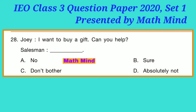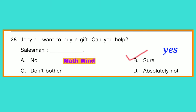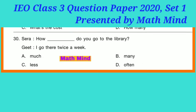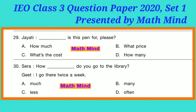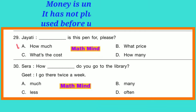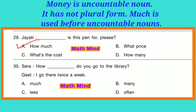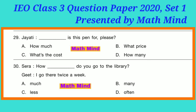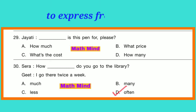Question 28: Joy: 'I want to buy a gift. Can you help?' Salesman: dash. Option B is correct: 'Sure.' Question 29: Jayati: 'Dash is this pen for?' Option A is correct: 'How much is this pen for?' Question 30: Sarah: 'How dash do you go to the library?' Geeta: 'I go there twice a week.' Option D is correct: 'often' — 'How often do you go to the library?' This expresses frequency — how frequently.